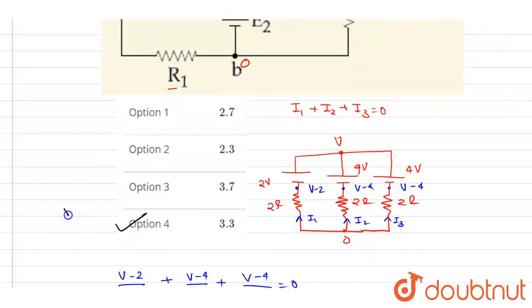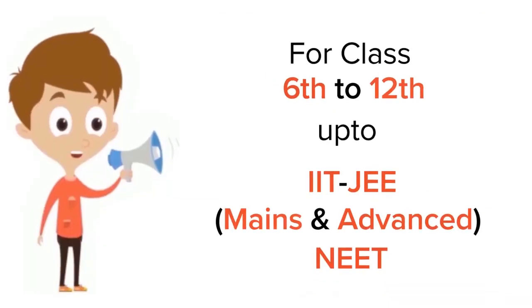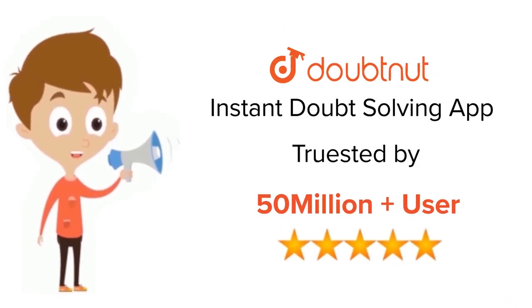So 10 by 3 is the correct answer. Thank you. For class 6 to 12, IIT-JEE and NEET level, trusted by more than 5 crore students, download Doubtnet.